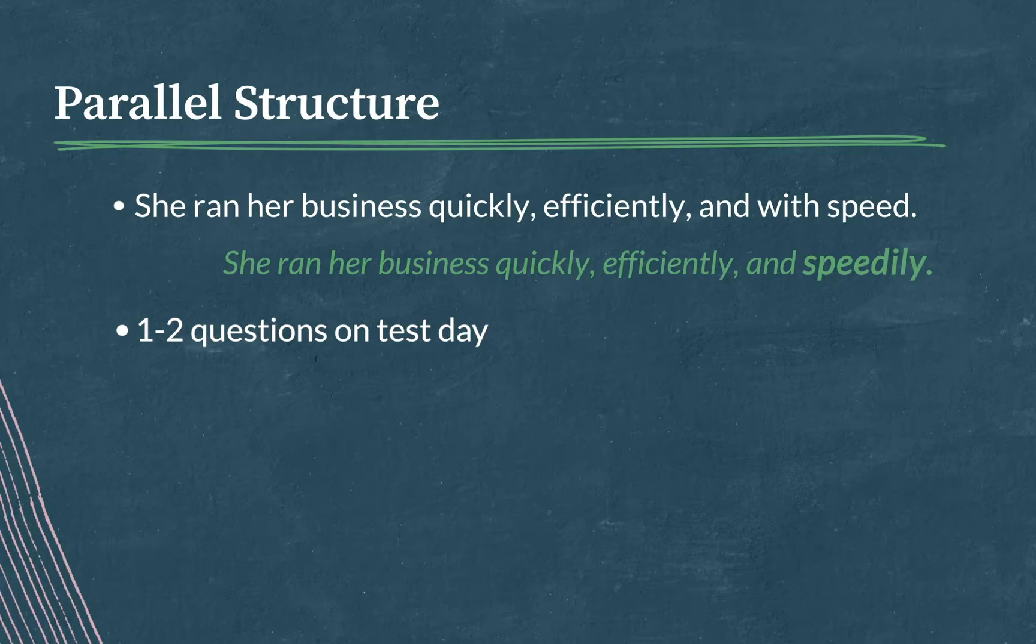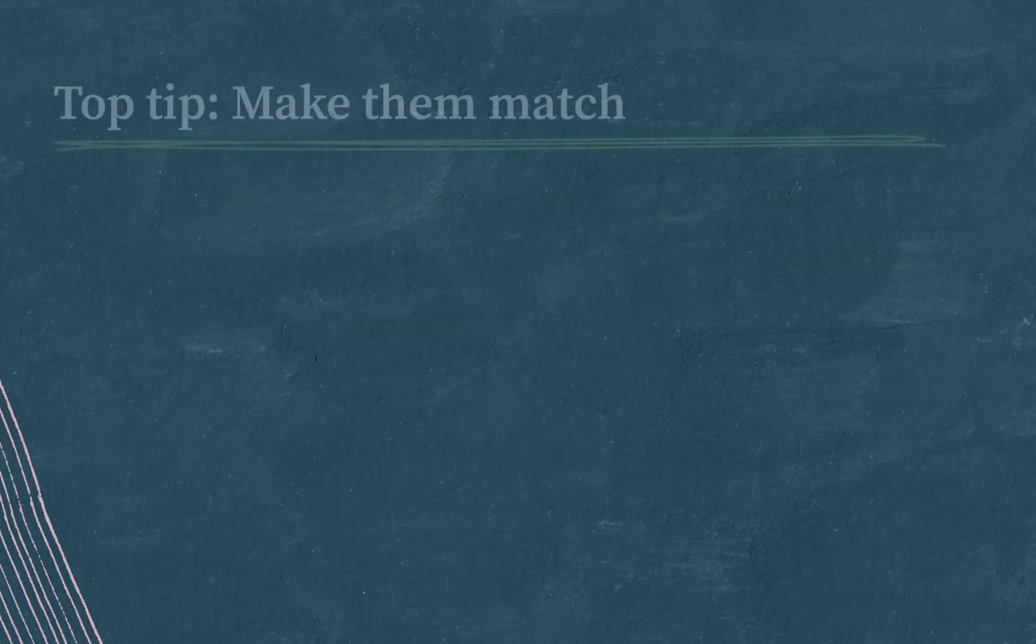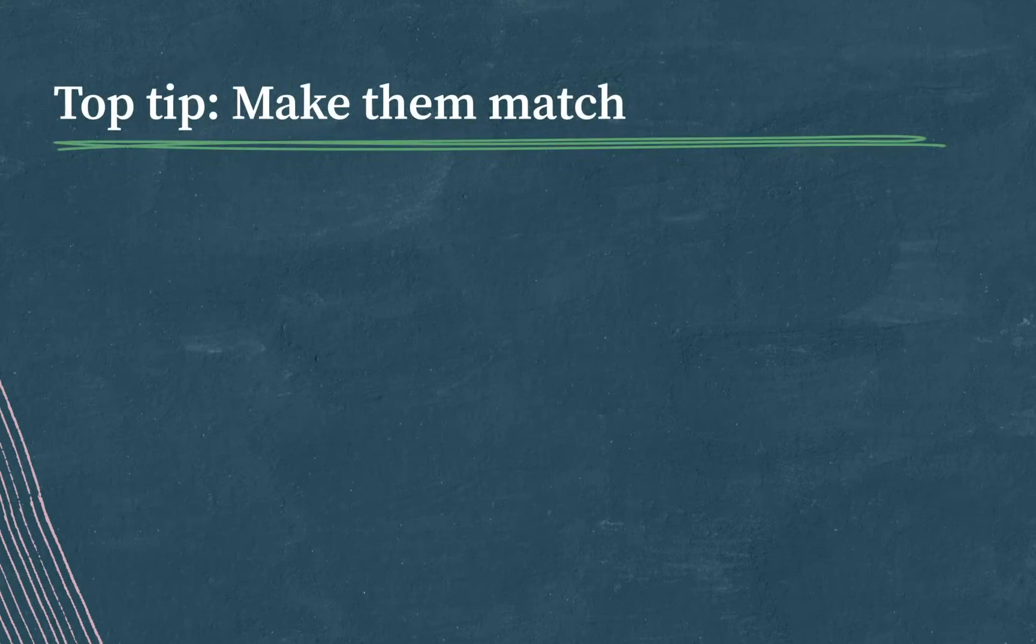Let's go over some top tips to handle parallel structure questions. Top tip, make them match. If you notice that a sentence is creating a set of two or more elements, try to make the structure of each underlined element match the structure of the others. So if the structure goes noun, noun, adjective, and the adjective is underlined, change the adjective to a noun to match the others.